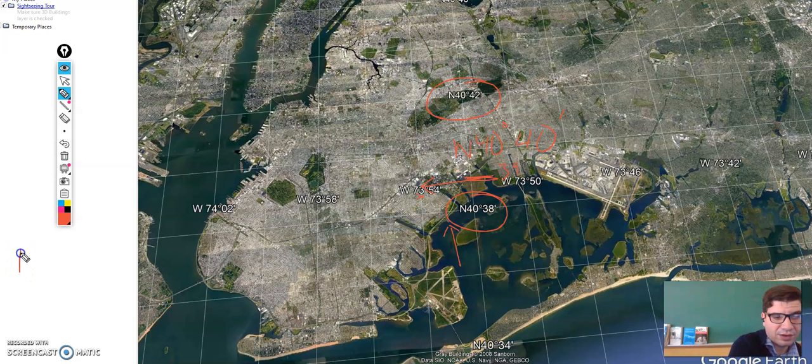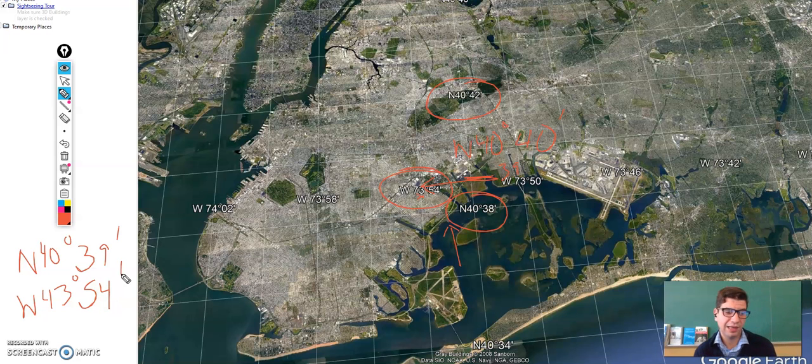So our - I'm going to write it over here on the left - our location would be North 40° 39 minutes, and that would be our latitude. For our longitude, we seem to be right on the West 73° 54 minute line. So this is the latitude and longitude of our school.